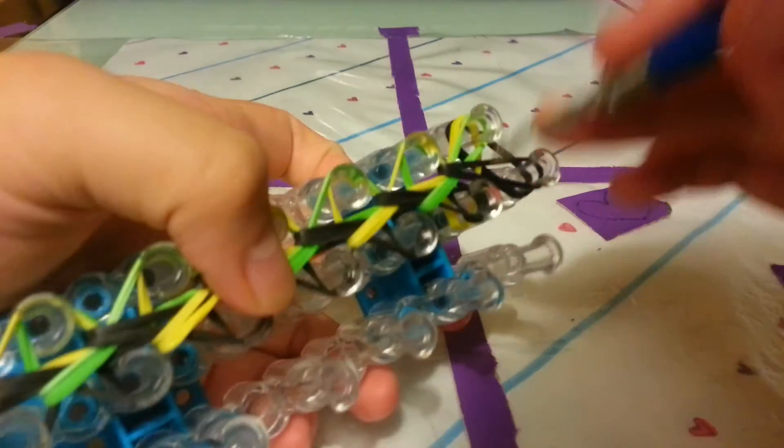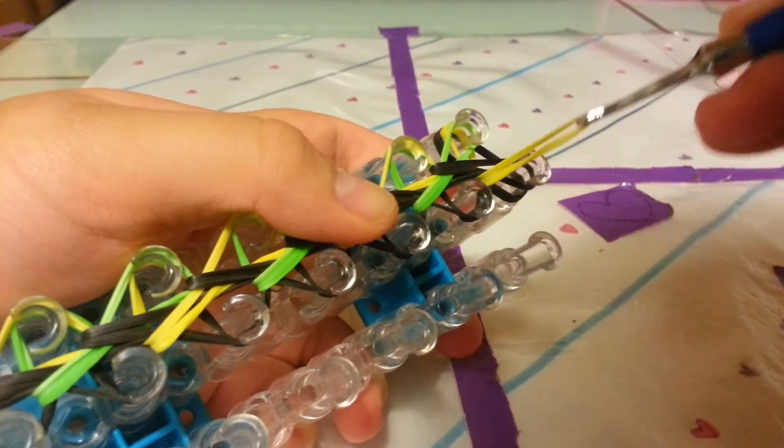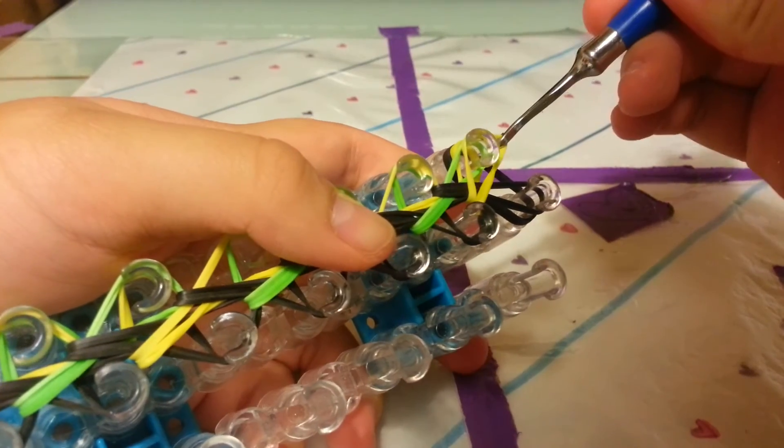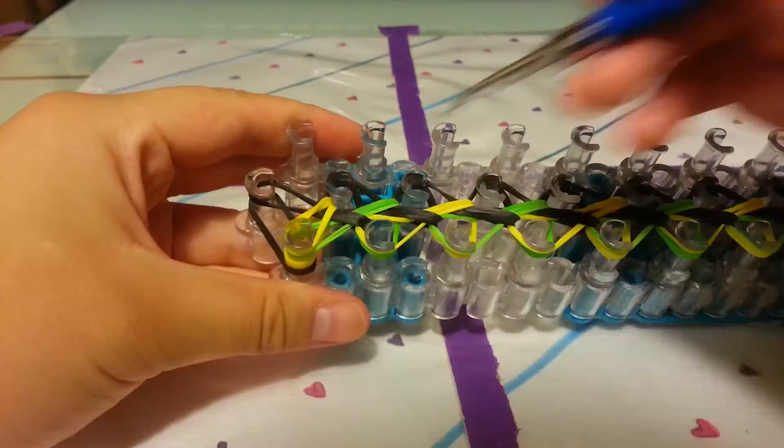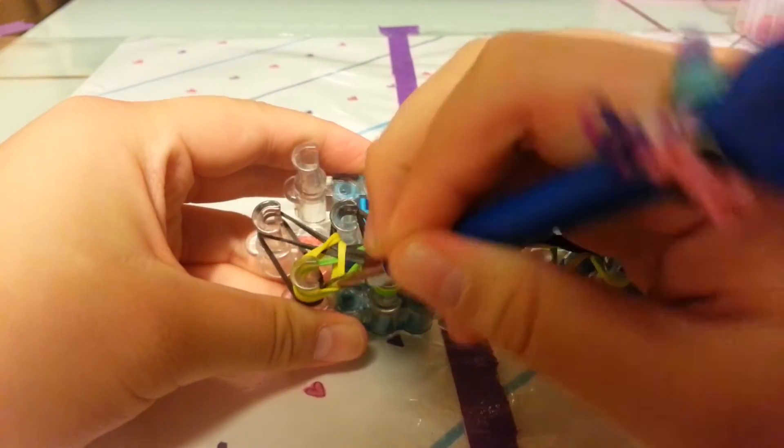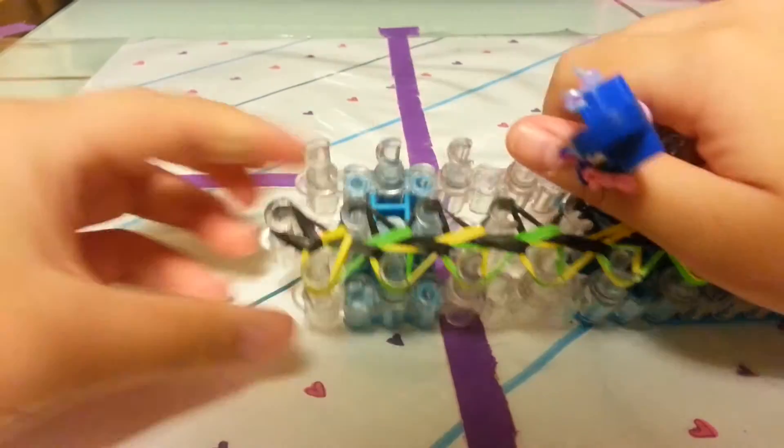When you're at this point, you want to go in this peg, grab this band, and place it on this peg right here. Then you go in this peg, grab this last black band, and pull it towards here.